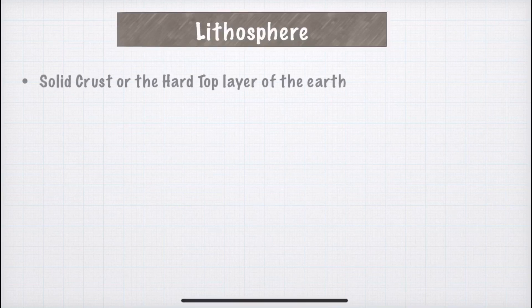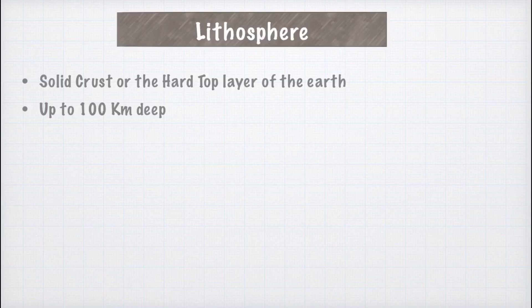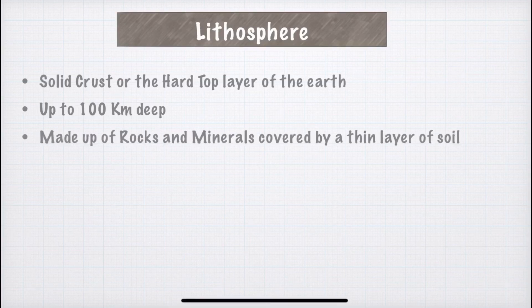First, we have lithosphere, which is related to land. Lithosphere is the solid crust or hard top layer of the earth. In the next chapter, you will see that the earth has many layers, like an onion, and lithosphere is the top layer. Lithosphere is up to 100 km deep — meaning if you start digging, you may find lithosphere up to 100 km at maximum. Beyond that is the next layer called the mantle. Lithosphere is made up of rocks and minerals, covered by a thin layer of soil.